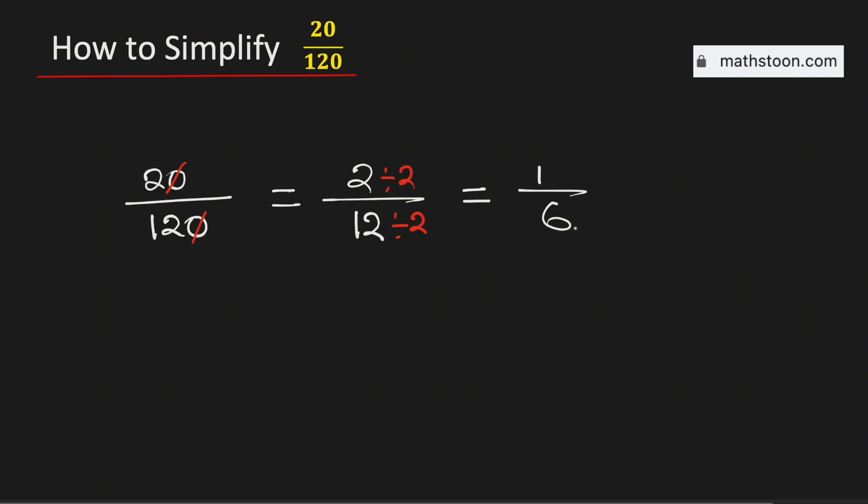As this fraction cannot be simplified further, the fraction 20 over 120 simplified is equal to 1 over 6, and it is in its lowest terms.